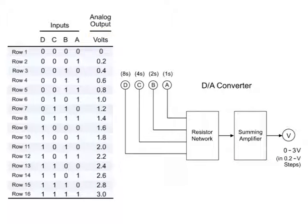With an input of 0, 0, 0, 0, according to the truth table, the voltage output would be 0. Inputting 0, 0, 0, 1 will result in an output of 0.2 volts.